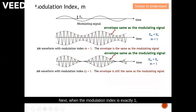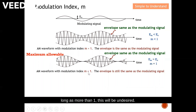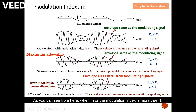When the modulation index is exactly one, we are still able to recover back the original modulating signal. However, the amplitude is at the threshold, and hence this is the maximum allowed modulation index. Anything more than one is undesired, as you can see from here.